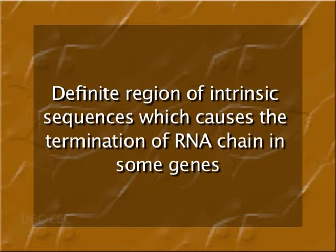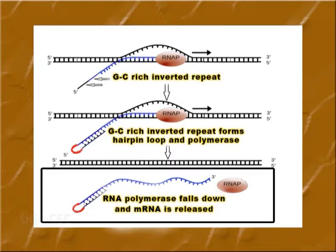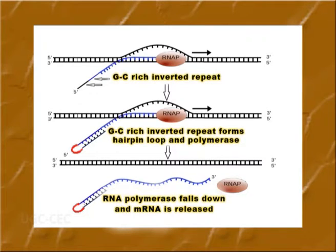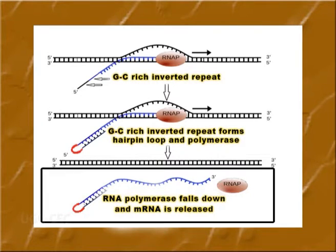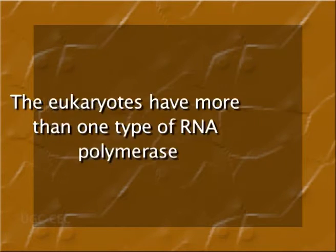In Rho-independent termination, definite regions of intrinsic sequences cause termination of the RNA chain. In some genes, this may be due to two guanine-cytosine-rich stretches at the end of the RNA transcript which are complementary to each other. These two GC-rich stretches form an intramolecular hairpin structure. This type of structure is thermodynamically unstable and causes the mRNA to fall from the DNA template. When the RNA is detached, RNA polymerase also falls off from the template and termination of transcription occurs, showing that the structure of RNA itself can cause its own termination.